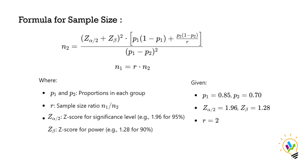The z-score for the significance level depends on the confidence level. Assuming 95 percent confidence level, z-alpha/2 will be 1.96. If power is assumed at 90 percent, z-beta will be 1.28. The given values are: p1 equals 0.85 (new vaccine success rate), p2 equals 0.70 (standard vaccine), z-alpha/2 is 1.96, z-beta is 1.28, and r is 2.